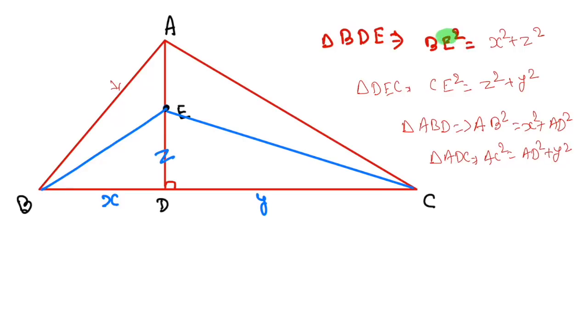So I am again repeating. The BE² is nothing but x² plus z². Then we have CE² is nothing but z² and y² and we have AB². The AB² is nothing but the AD² plus x². Similarly, the AC² is nothing but y² and the AD².